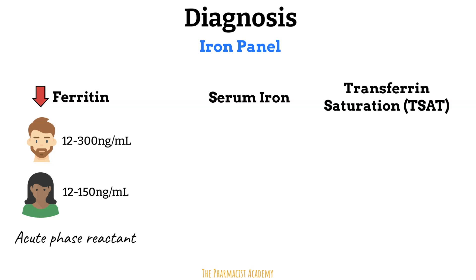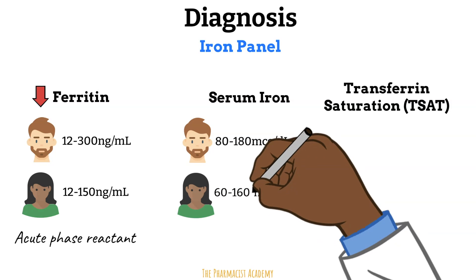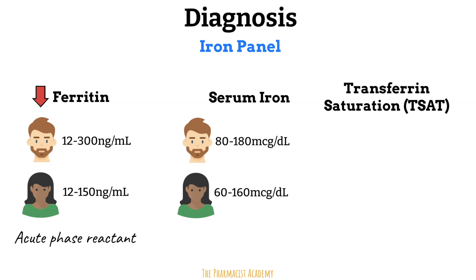Next we look at the serum iron, which is the level of iron in the blood. Ferritin stores iron in the cells and releases it into the blood; that iron is bound to a protein called transferrin, which is the vehicle for transporting iron in the blood. The serum iron measures circulating iron — iron in the blood bound to transferrin. For males it's 80 to 180 micrograms per deciliter, and for females 60 to 160. In iron deficiency anemia, the levels should be low.